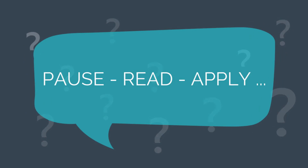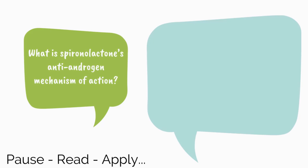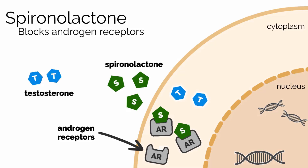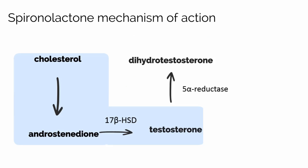Let's pause, read, and apply. What is spironolactone's antiandrogen mechanism of action? Spironolactone's mechanism of action includes being a competitive inhibitor of the androgen receptor and by decreasing androgen synthesis. Spironolactone blocks androgens from binding to and activating receptors. In addition, spironolactone decreases the activity of 17-beta-hydroxysteroid dehydrogenase, thereby stopping the conversion of androstenedione to testosterone. It may also inhibit 5-alpha-reductase, which prevents conversion of testosterone to dihydrotestosterone.